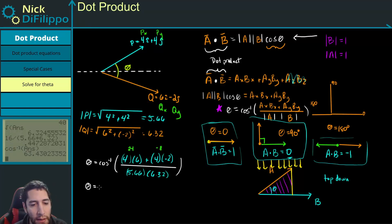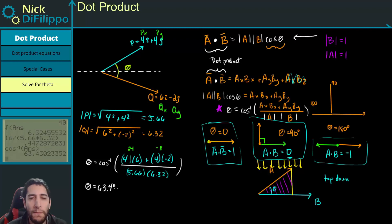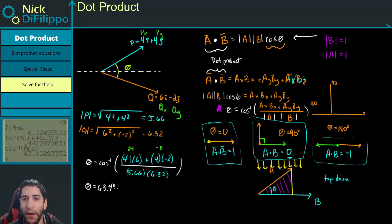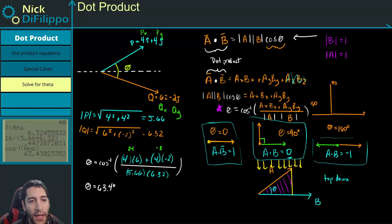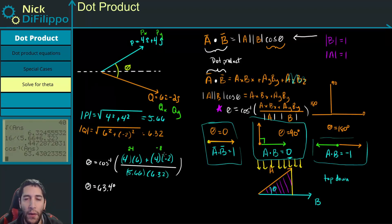Theta is equal to 63.4 degrees. Hopefully this video has given you a sense of what the dot product is and how to use it. Now you can solve any dot product problem in a 2D system.